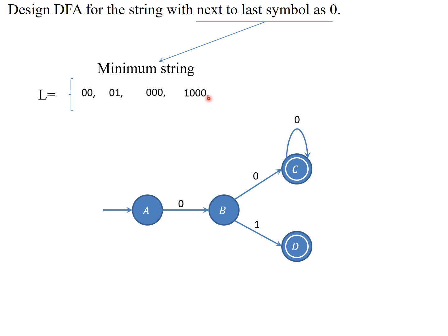Look at another example — this is also a possible valid string where the next-to-last symbol is zero. When starting at A there is no transition on one. It can generate any number of ones on A followed by any zeros. So create a self-loop on A for one. For example, three ones followed by three zeros is accepted since you land in the final state.